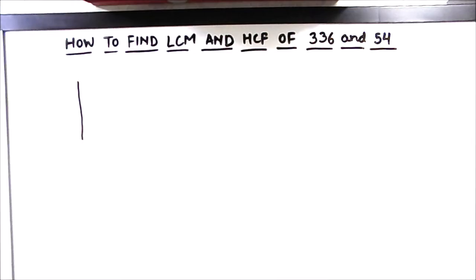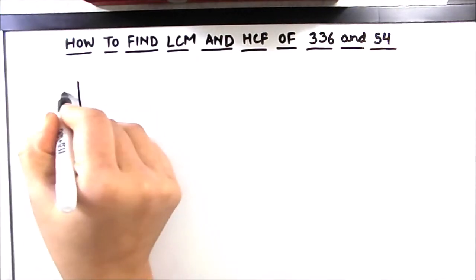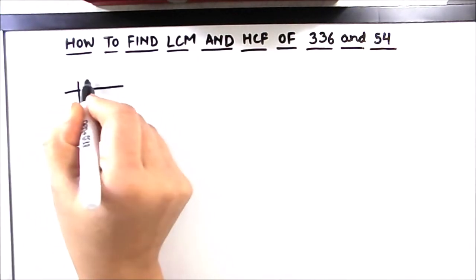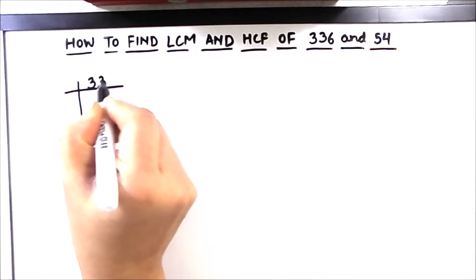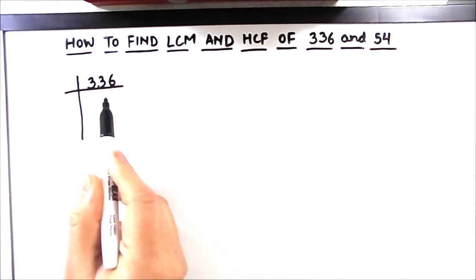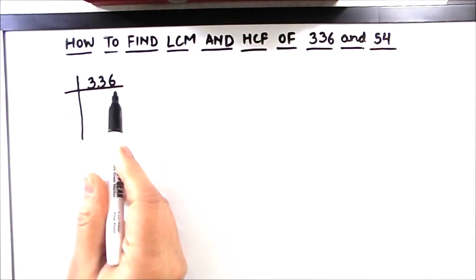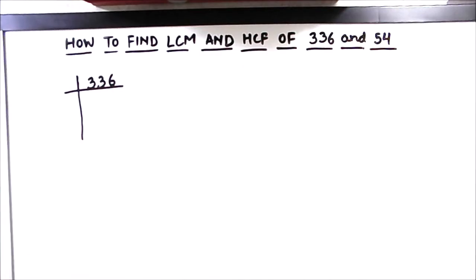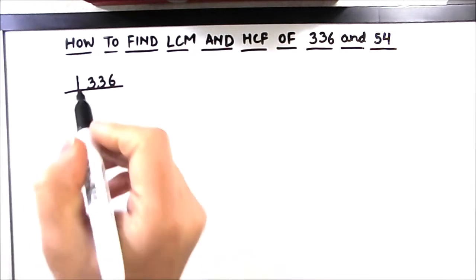Let's start by finding the prime factors of the two numbers and do the prime factorization of both the numbers separately. First we will do the prime factorization of 336. In the prime factorization method, we divide the number by prime numbers and find the factors of the number.